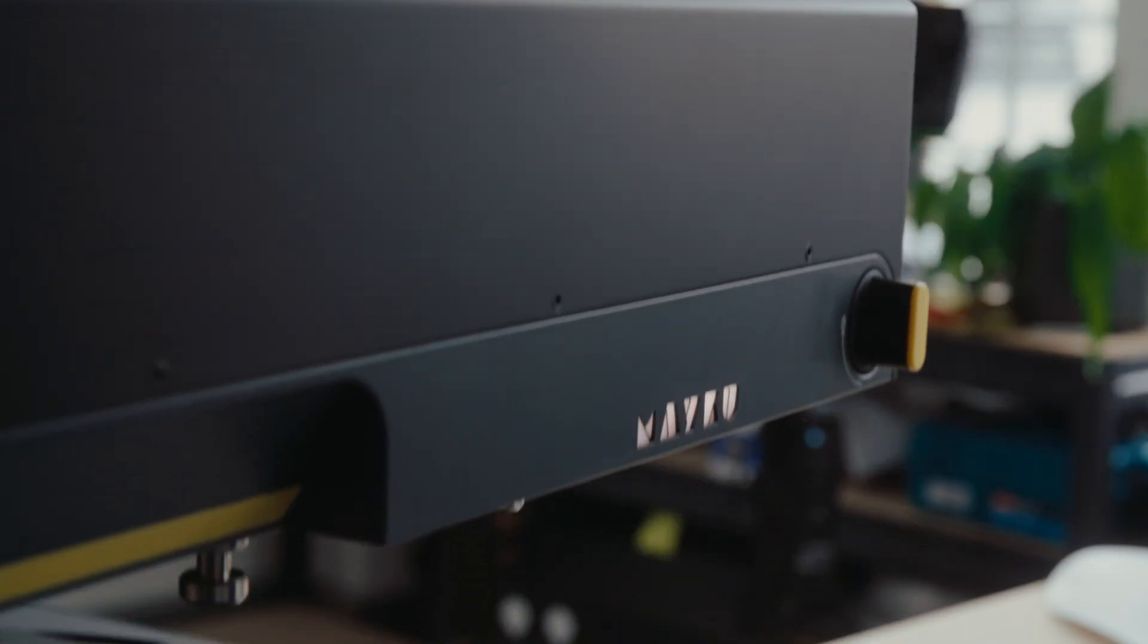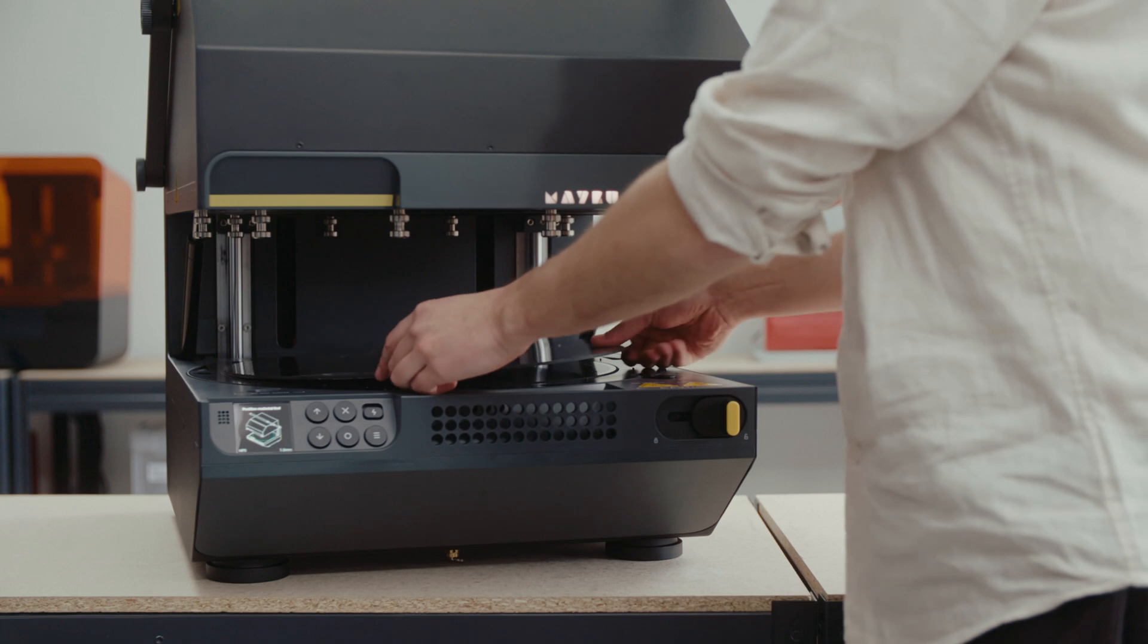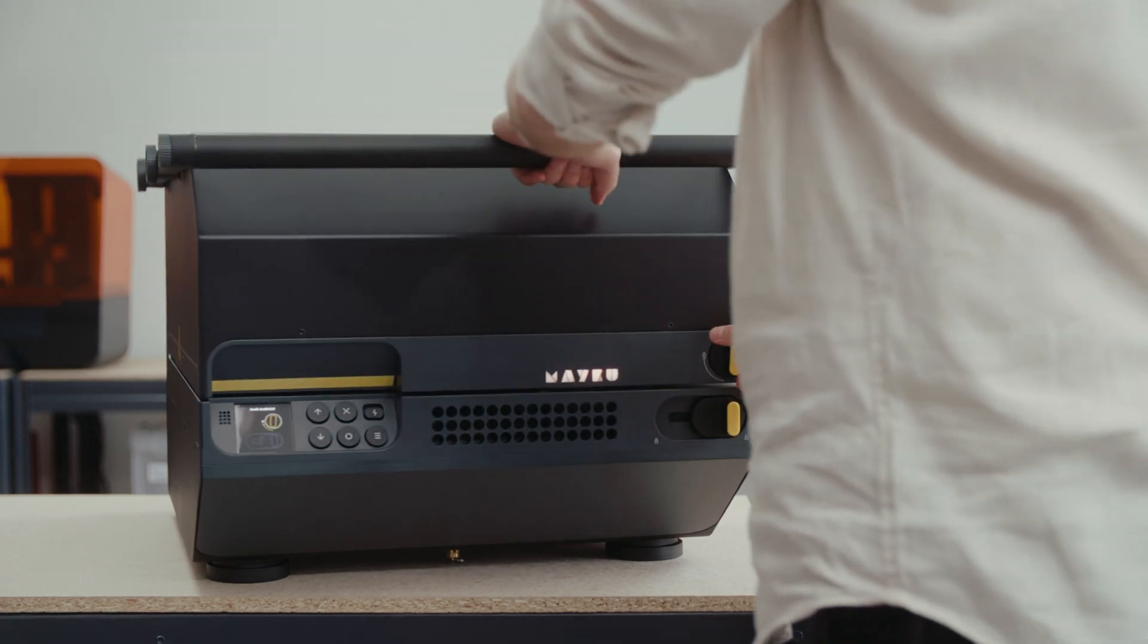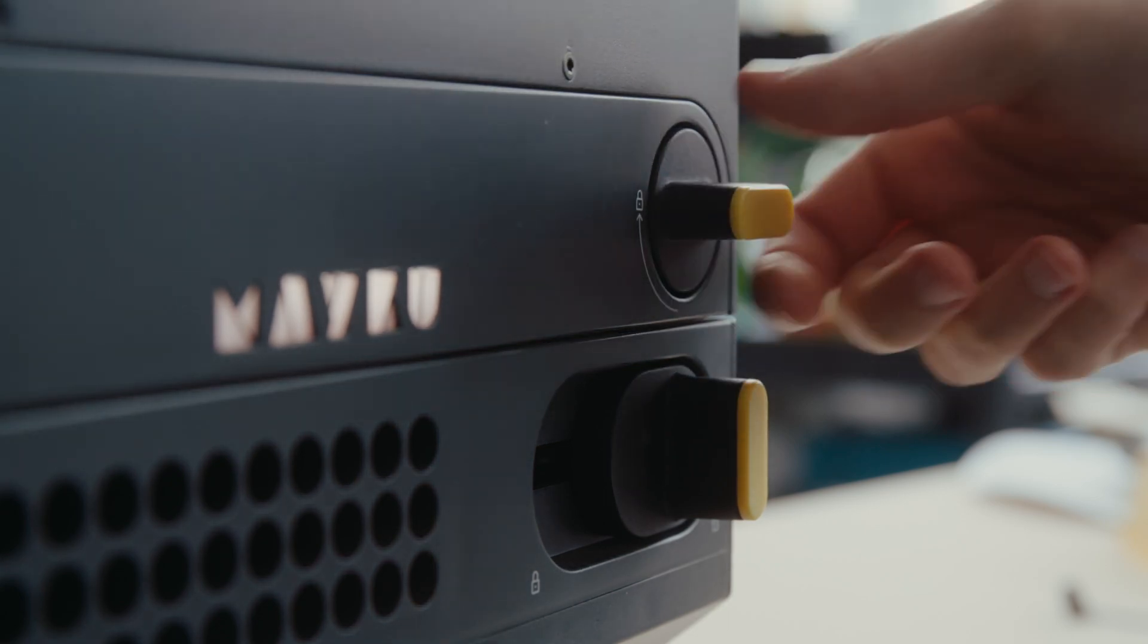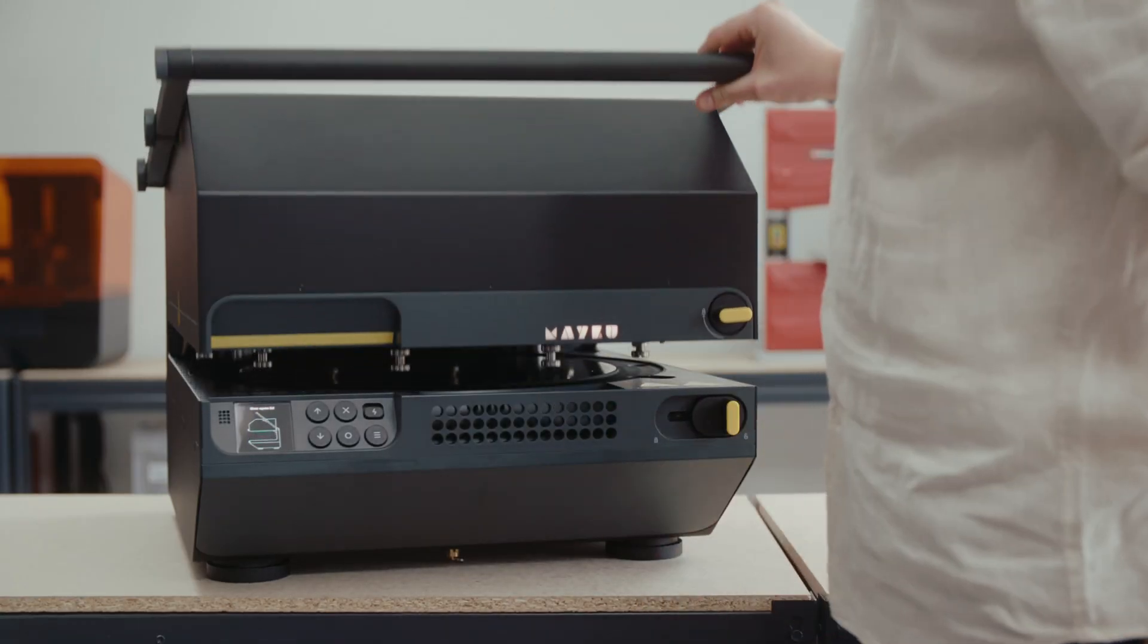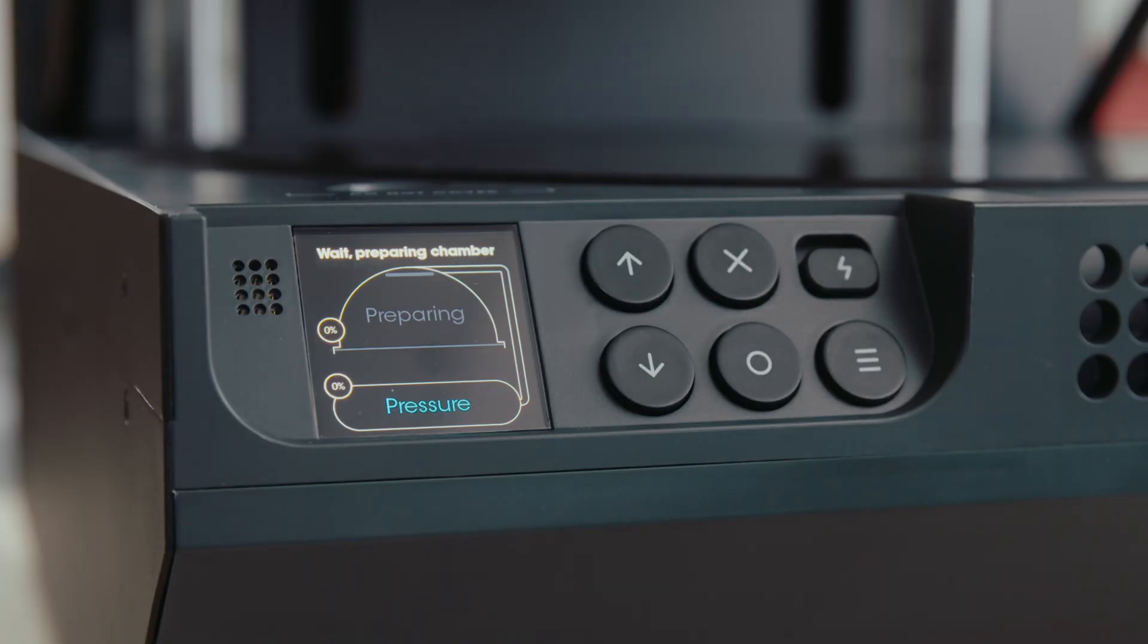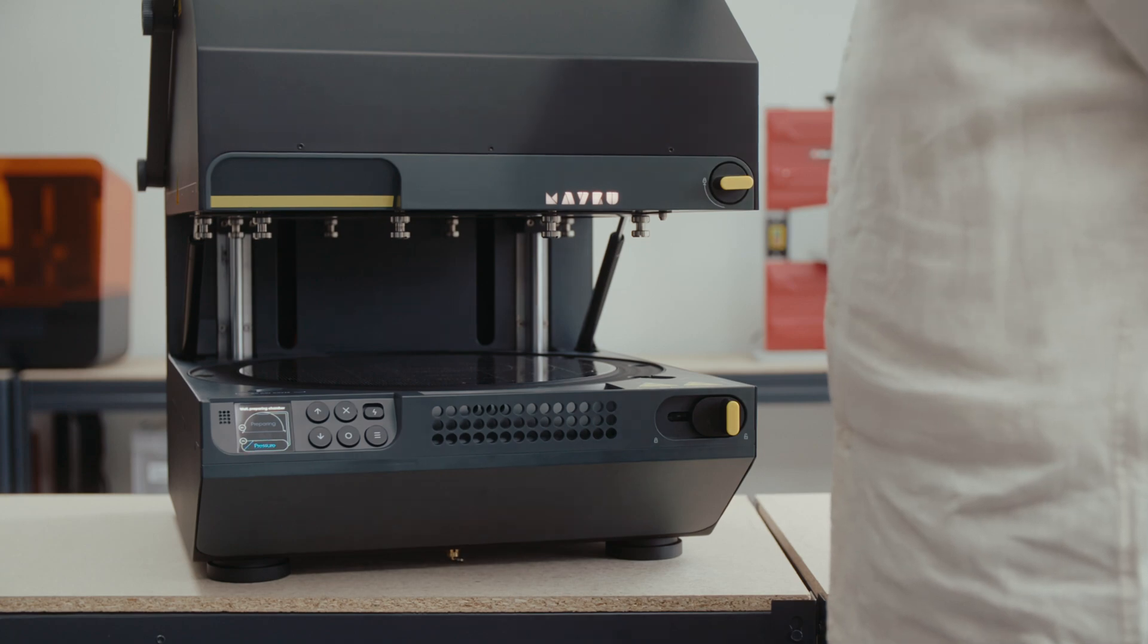Open the lid of the machine and position the material on top of the guides. Bring the lid down and turn the top lock to hold the material in place. Once the material is in place, you'll hear the air tanks compressing below the forming area. The heating process starts automatically while the air tanks are compressing.